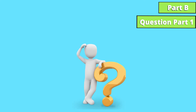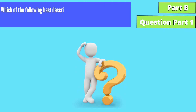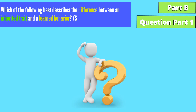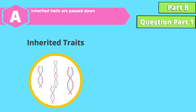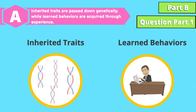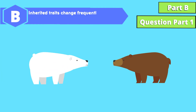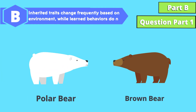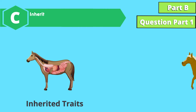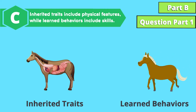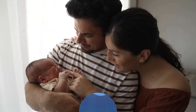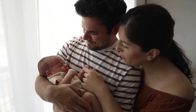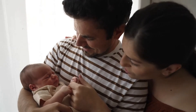Part B, Question 1: Which of the following best describes the difference between an inherited trait and a learned behavior? Select two correct answers. A: Inherited traits are passed down genetically while learned behaviors are acquired through experience. B: Inherited traits change frequently based on environment while learned behaviors do not. C: Inherited traits include physical features while learned behaviors include skills. D: Learned behaviors are passed down from parents just like inherited traits. Quick tip: Consider how these traits are acquired — are they inherited from parents, or do they require practice and learning?